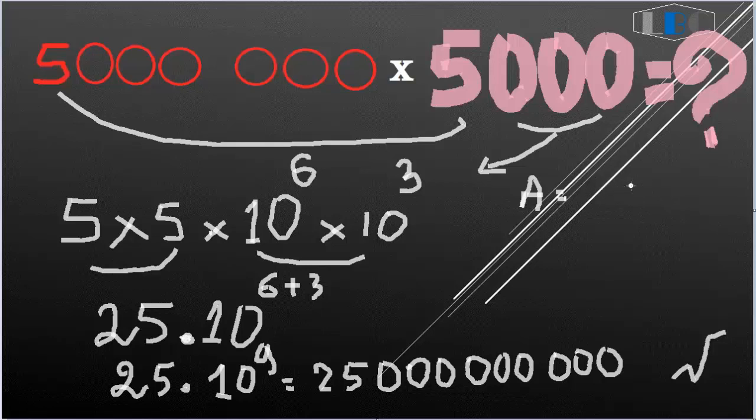So B, yes, only B is the correct answer. The others are not true because answer A is 25 times 10 to the 8, not 9. So B is correct, not C and D.